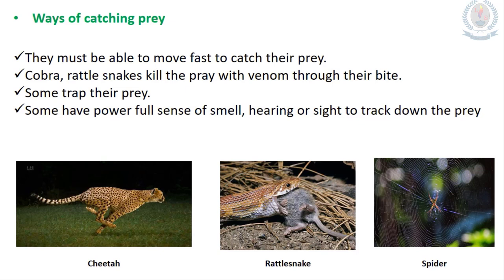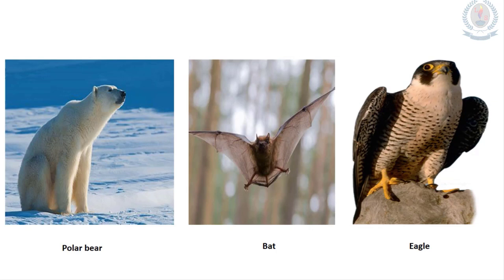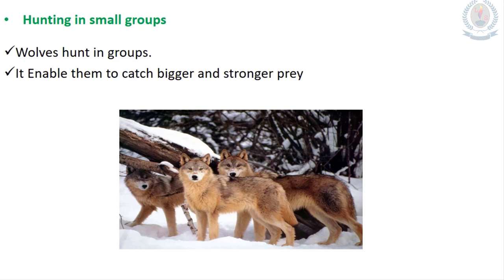Some animals have a powerful sense of smell, hearing or sight to track down prey. The polar bear, bat and eagle have powerful senses and sharp vision to catch prey. Wolves hunt in groups, which enables them to catch bigger and stronger prey.